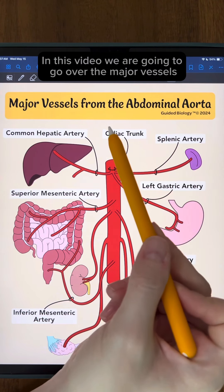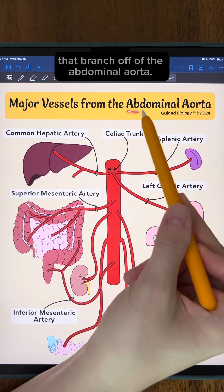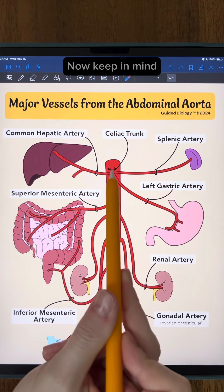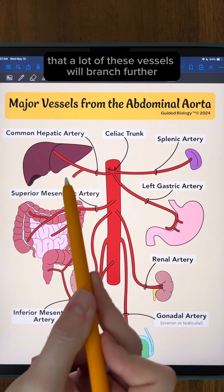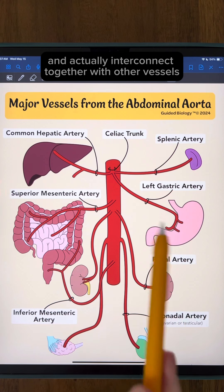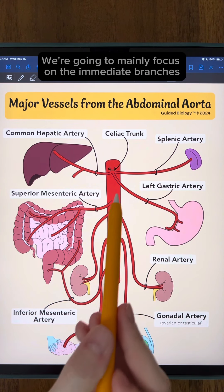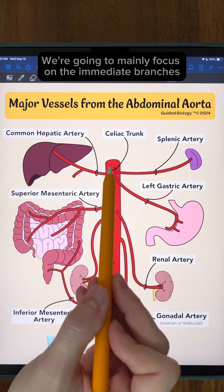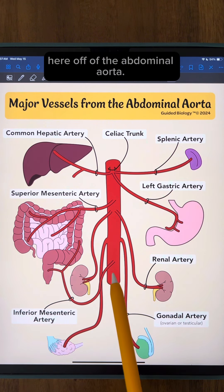In this video, we are going to go over the major vessels that branch off of the abdominal aorta. Keep in mind that a lot of these vessels will branch further and actually interconnect together with other vessels and become a little more complicated, but we're going to mainly focus on the immediate branches off of the abdominal aorta.